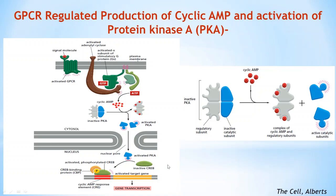The activated catalytic subunits go to the nucleus and activate target proteins by phosphorylating specific serine or threonine residues on intracellular signaling or effector proteins, thereby regulating their activity. The regulatory subunits of PKA, also called A-kinase anchoring proteins (AKAPs), are important for localizing the kinase inside the cell. In unstimulated cells, phosphodiesterase keeps local cyclic AMP concentration low so that PKA remains inactive. PKA also phosphorylates and activates phosphodiesterase, which rapidly lowers cyclic AMP concentration again, resulting in a response that is strong and brief.